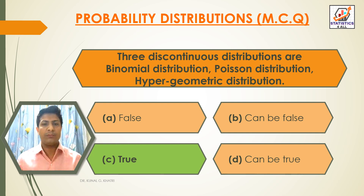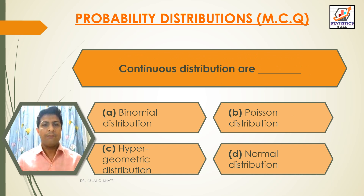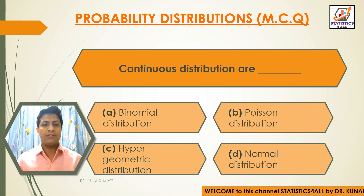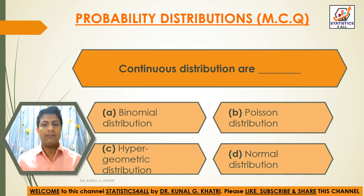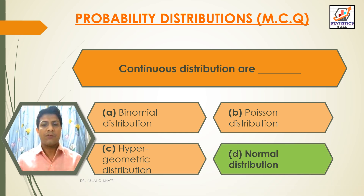Next question: continuous distributions are. Option A: binomial distribution. Option B: Poisson distribution. Option C: hypergeometric distribution. Option D: normal distribution. The answer is option D, normal distribution.